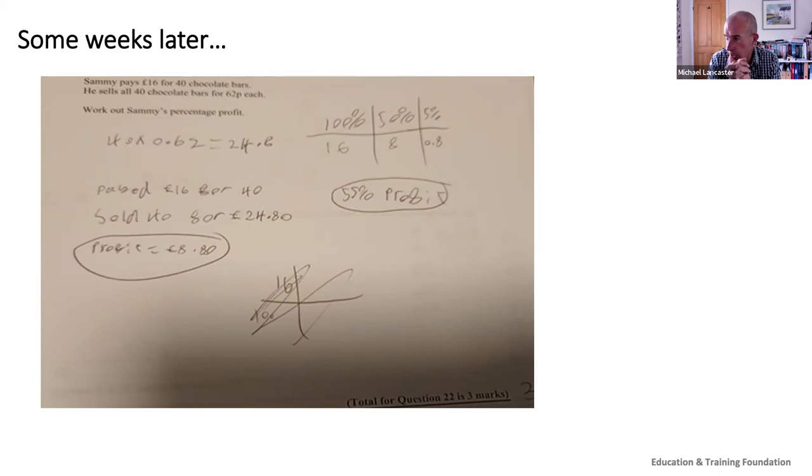And then look in the top right-hand corner. The student clearly understands that 16 pounds is the starting point, the 100 percent, and they've used a halving strategy and then a divide by 10 strategy to get the 0.8 in order to build up to that target of 24 pounds 80 and get their 55 percent.